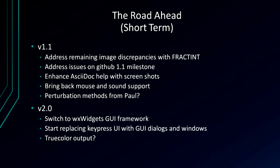Short term, 1.0 was released earlier this week — you can get it from GitHub with a compiled version and source code. For 1.1, planned maybe by end of year, now that we have HTML help format we can add images to the help for the first time — screenshots and images of various fractals. Paul is working on integrating perturbation methods for accelerating deep zooms. I'd like to re-enable mouse and sound support; I still need to find a good audio library for the sound. Mouse support should also be back for 1.1.